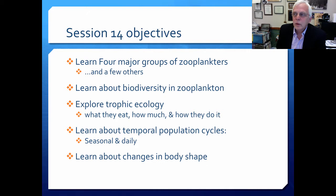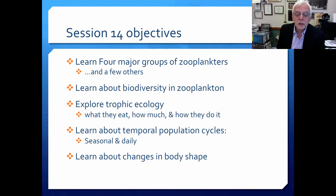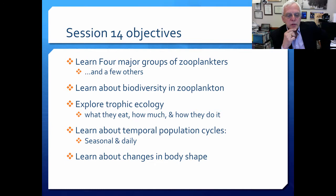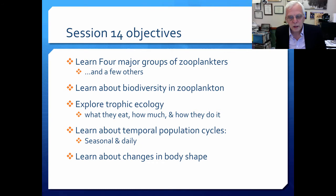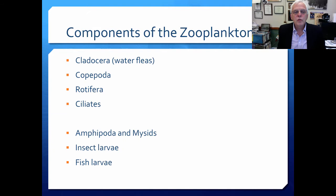The objectives for this session are quite straightforward. First, I want you to learn the four major groups of zooplankton in inland water systems, and then we'll talk about a few others too. I'd like you to learn about biodiversity in the zooplankton and what they do, and to explore their trophic ecology — what they eat, who eats them, how much gets eaten, and how they go about doing it. I'd also like you to learn about temporal population cycles, seasonal population cycles as well as daily cycles, and changes in body shape that are quite interesting and diagnostic.